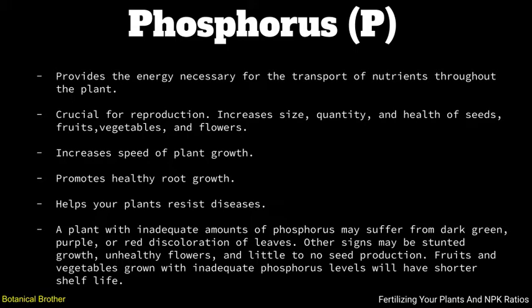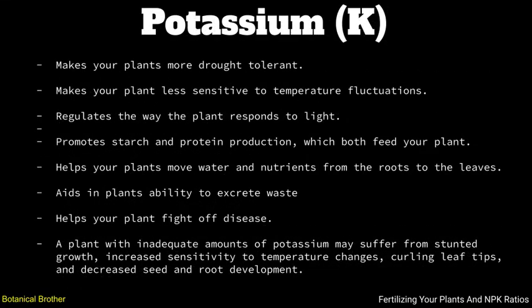Fruits and vegetables grown with inadequate phosphorus levels will have a shorter shelf life. Last but not least we have potassium. Potassium makes your plants more drought tolerant, makes them less sensitive to temperature fluctuations, regulates the way the plant responds to light, promotes starch and protein production which both feed your plant, helps your plant move water and nutrients from the root system to the leaves, aids the plant in its ability to excrete waste, and helps your plant fight off disease. A plant with inadequate amounts of potassium may suffer from stunted growth, increased sensitivity to temperature changes, curling leaf tips, and decreased seed and root development.